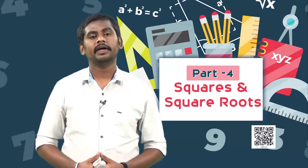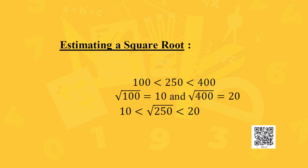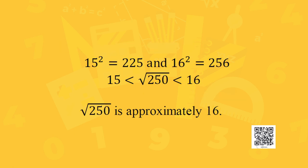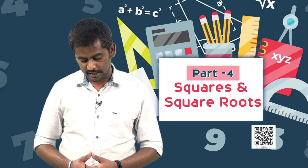Now let us estimate the square root of 250. We know 100 < 250 < 400, so √100 = 10 and √400 = 20, meaning 10 < √250 < 20. To get closer: 15² = 225 and 16² = 256. So 15 < √250 < 16, and since 256 is much closer to 250 than 225, the square root of 250 is approximately equal to 16.